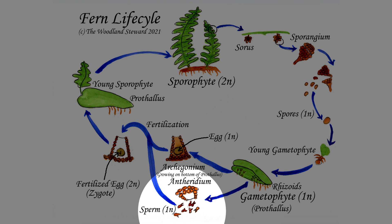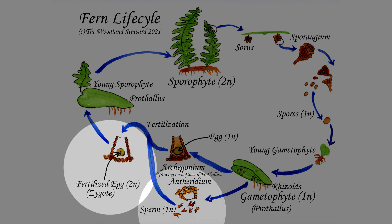When conditions are right — meaning enough moisture — the antheridia open up and release sperm, which swim looking for ripe eggs in archegonia. To mix up the genetics, ideally you don't want self-pollination. So the antheridia generally ripen first and release sperm, which swim off through a film of water on the surface of the prothallus or on the ground, hopefully finding another prothallus with ripe eggs.